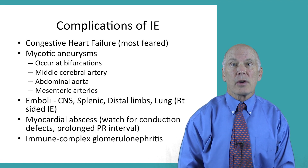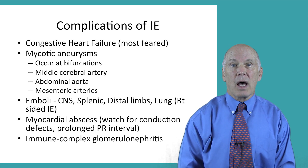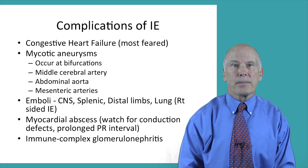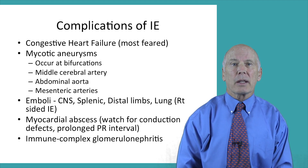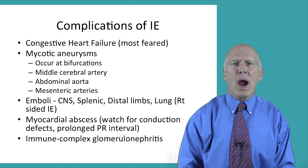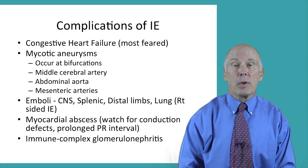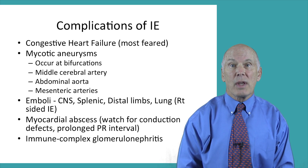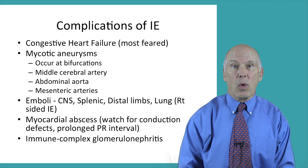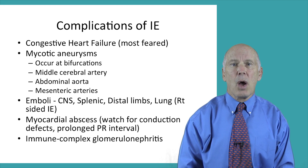Emboli can also occlude other central nervous system vessels, as well as the spleen, or lodge in a vessel of the distal extremities — which is why it is important to periodically check all peripheral pulses. Emboli generally occur prior to or early in antibiotic therapy, and after two weeks of treatment the risk decreases. Large vegetations greater than 10 millimeters have been shown to increase the risk of emboli in Staph aureus endocarditis. In intravenous drug abusers, right-sided endocarditis is most common and these patients often suffer pulmonary emboli.